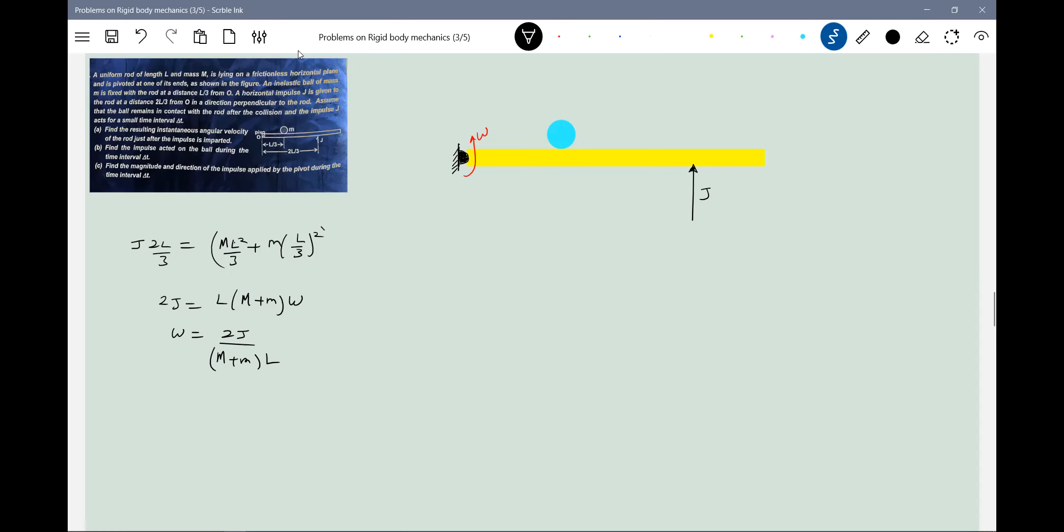This will become ML by three Omega square. So three M will come here, six will be there. And look at the calculations. So this is our one equation.